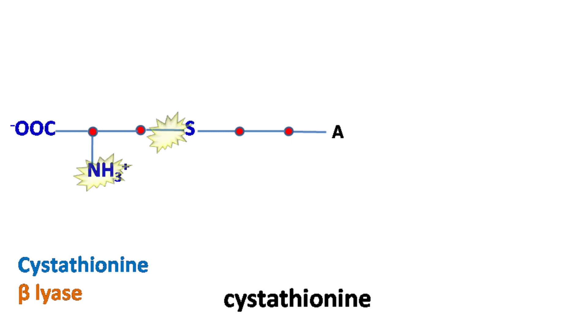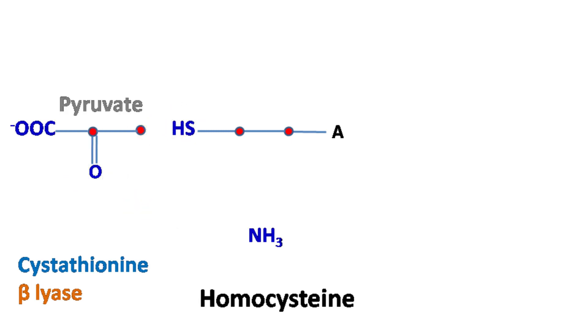Cystathionine lyase then lyses cystathionine into molecules of pyruvate and homocysteine.